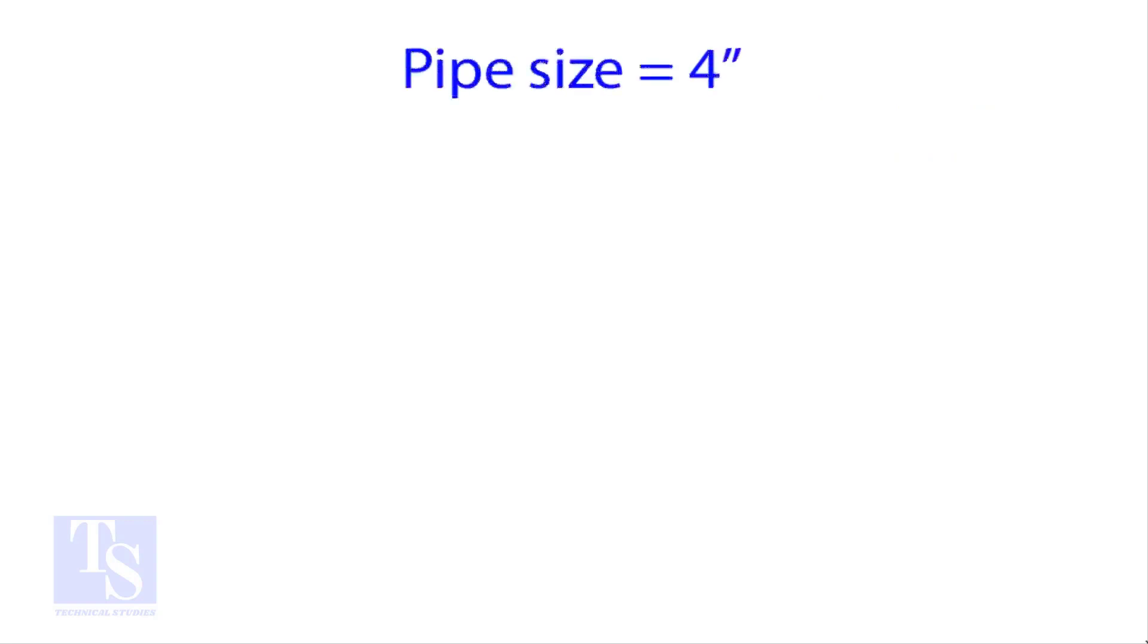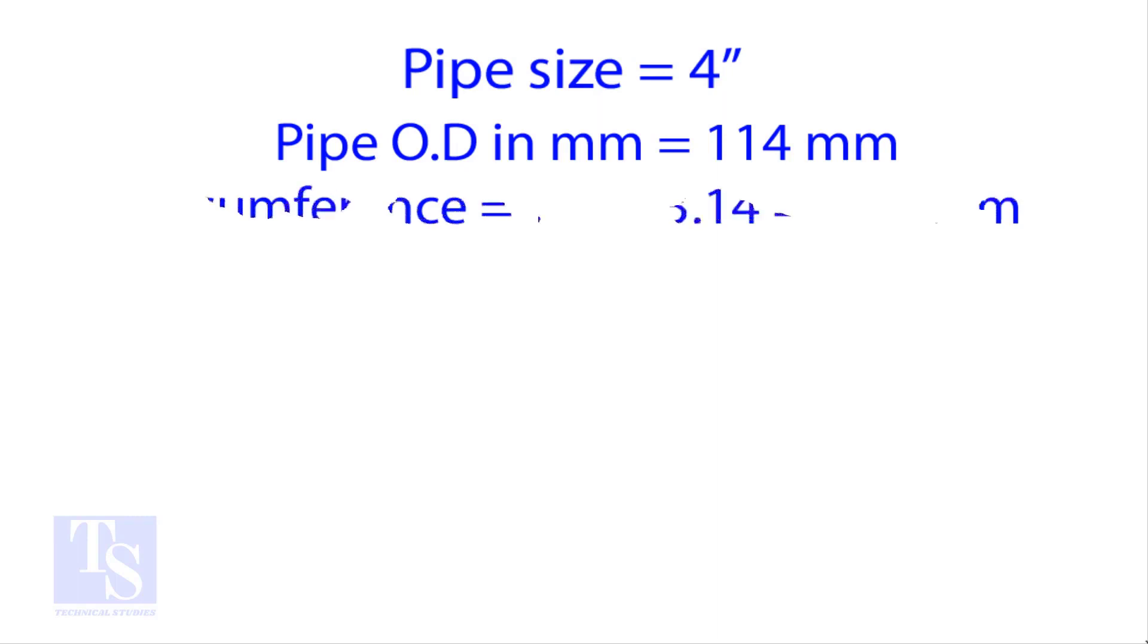Let us try an example. Calculate the cutback of a 4 inch pipe with 4 cuts. OD of a 4 inch pipe is 114 millimeters. Multiply the OD by 3.14 for the circumference. The bend angle is 90 degree. Number of cuts is 4.